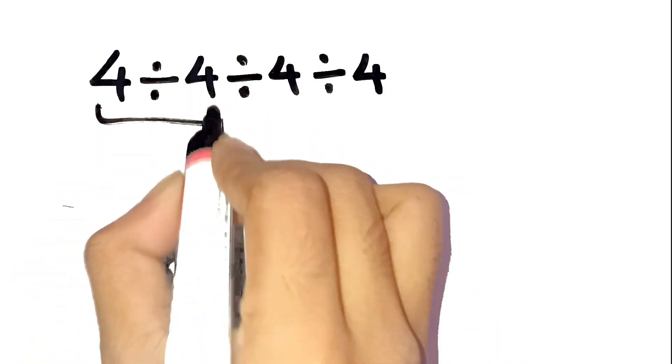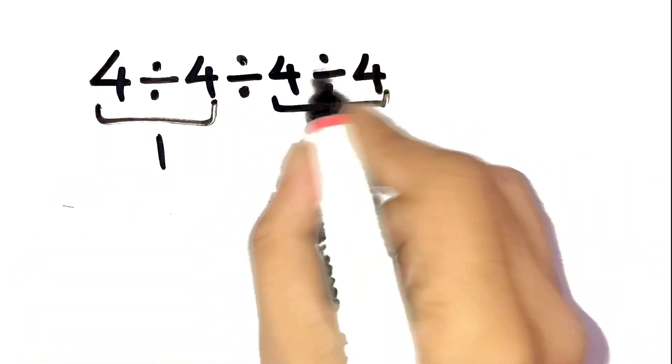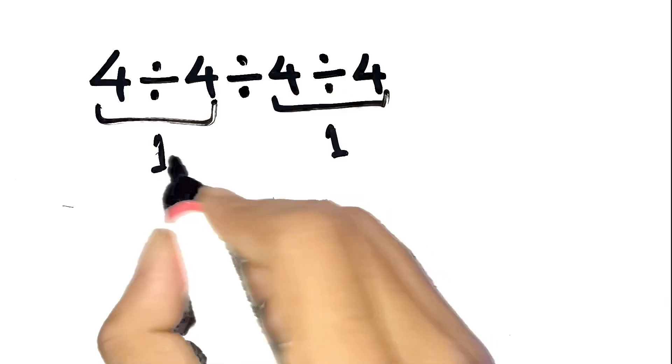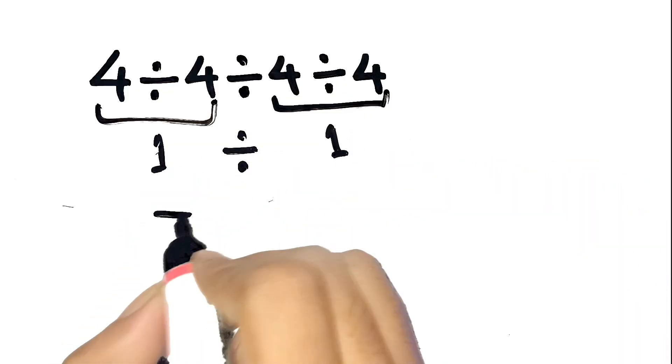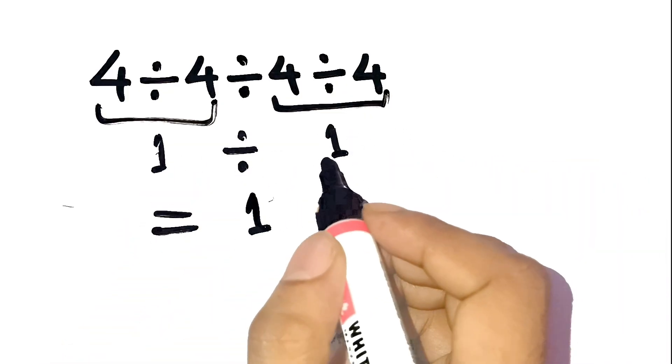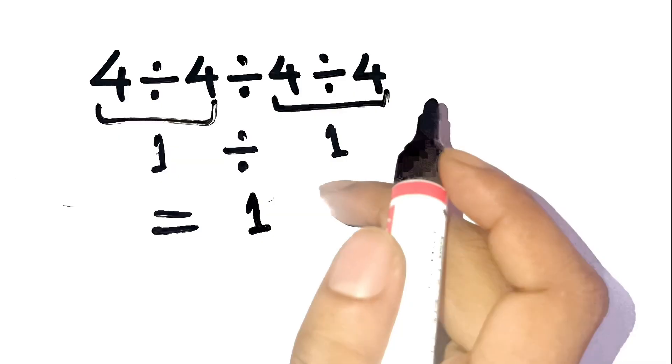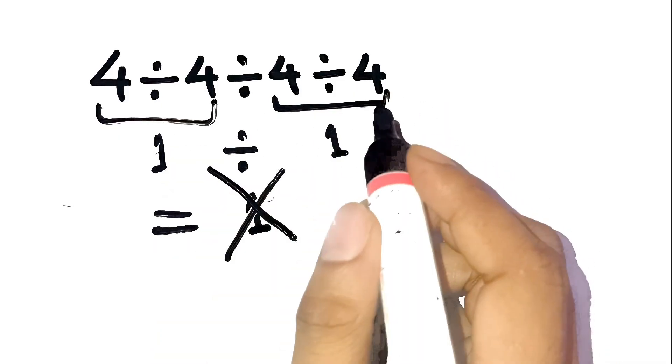4 divided by 4 is 1. And on the right side, 4 divided by 4 is also 1. So, 1 divided by 1 equals 1. Seems simple, right? But nope, that's not how division actually works.